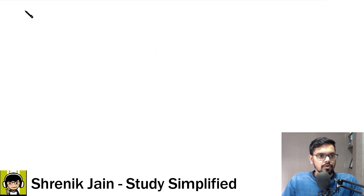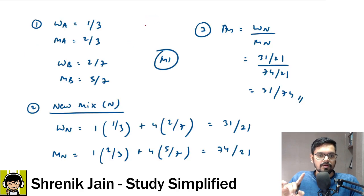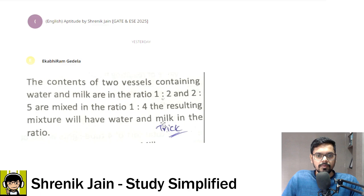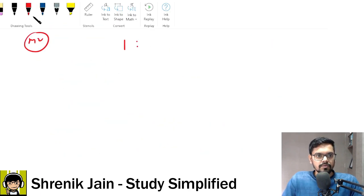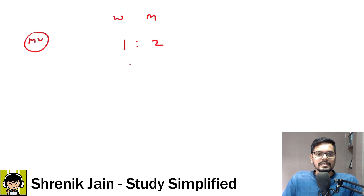Now some students were in search of method 2. How can we solve in seconds? So yes, you can solve in seconds by saying that the first vessel we had water to milk. This is what we needed. Always check which ratio we need. Water to milk. And given data was all about water to milk. So water to milk, first vessel it was 1:2. Second vessel it was 2:5.